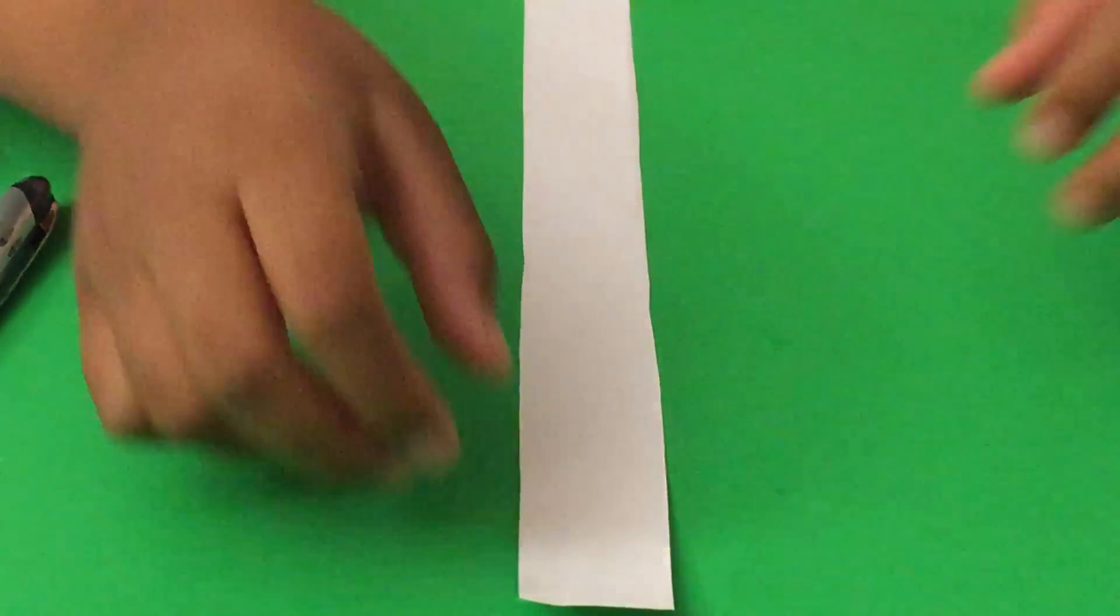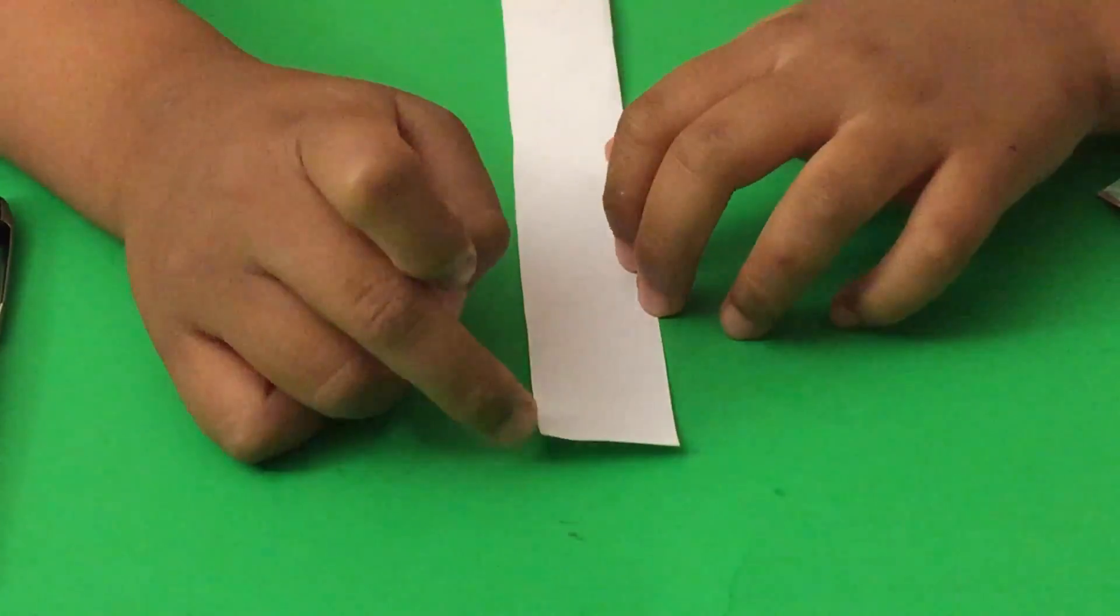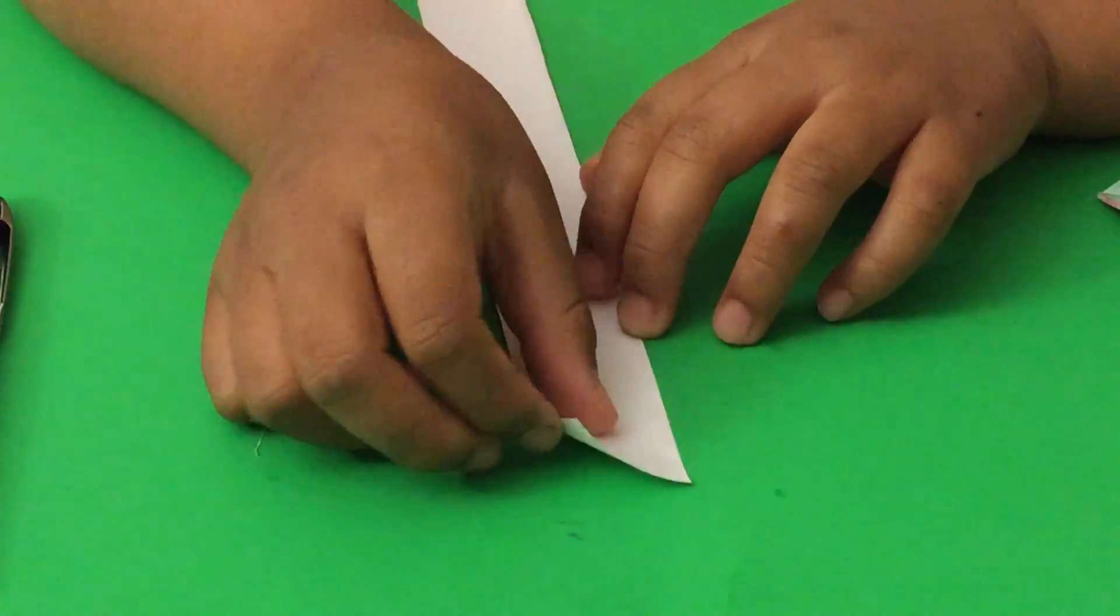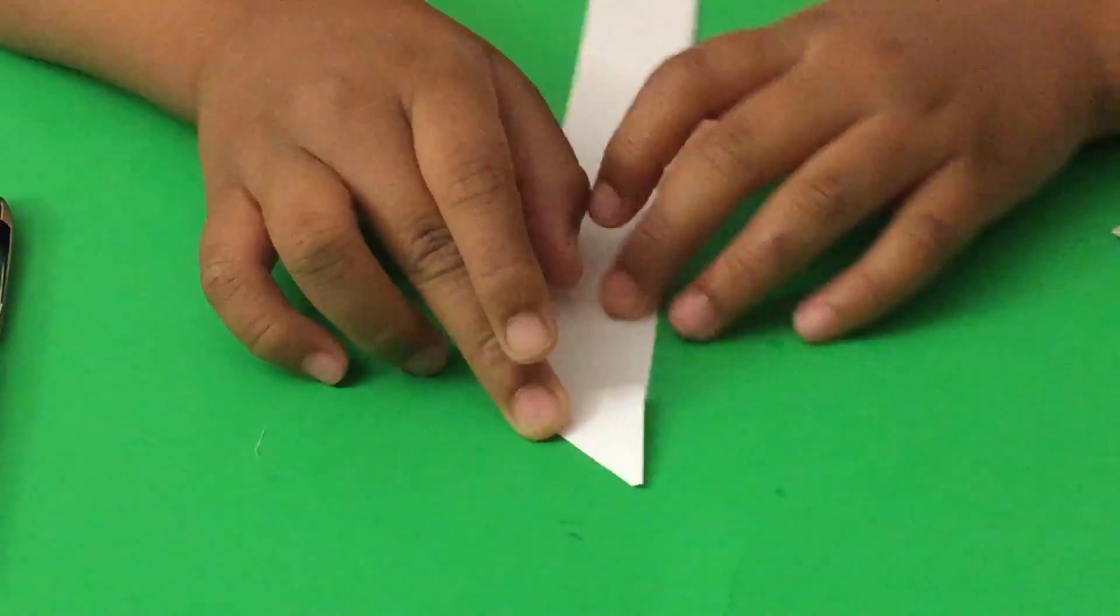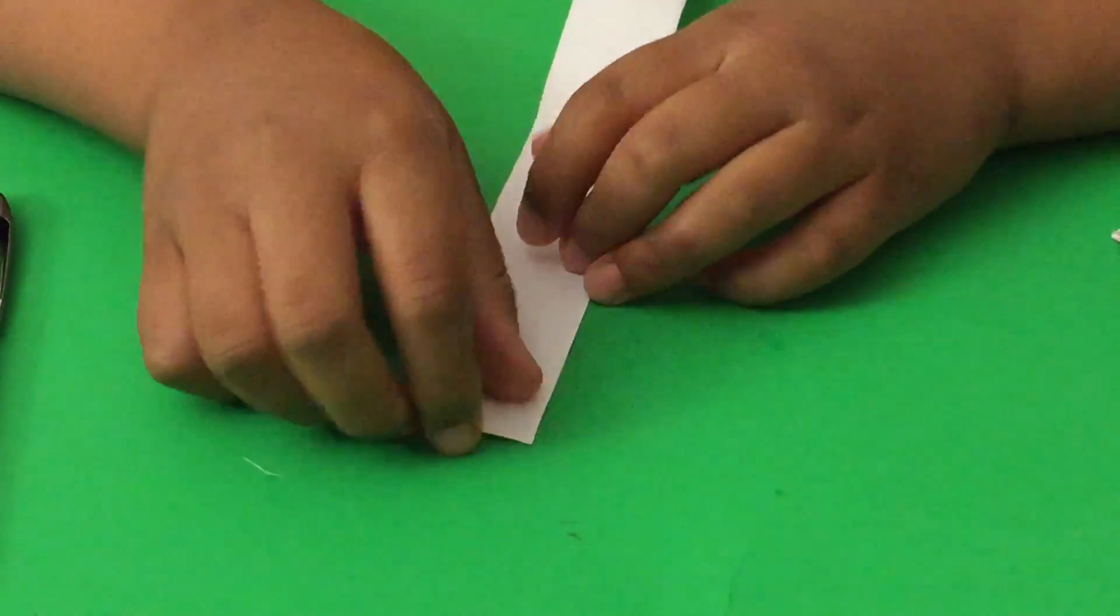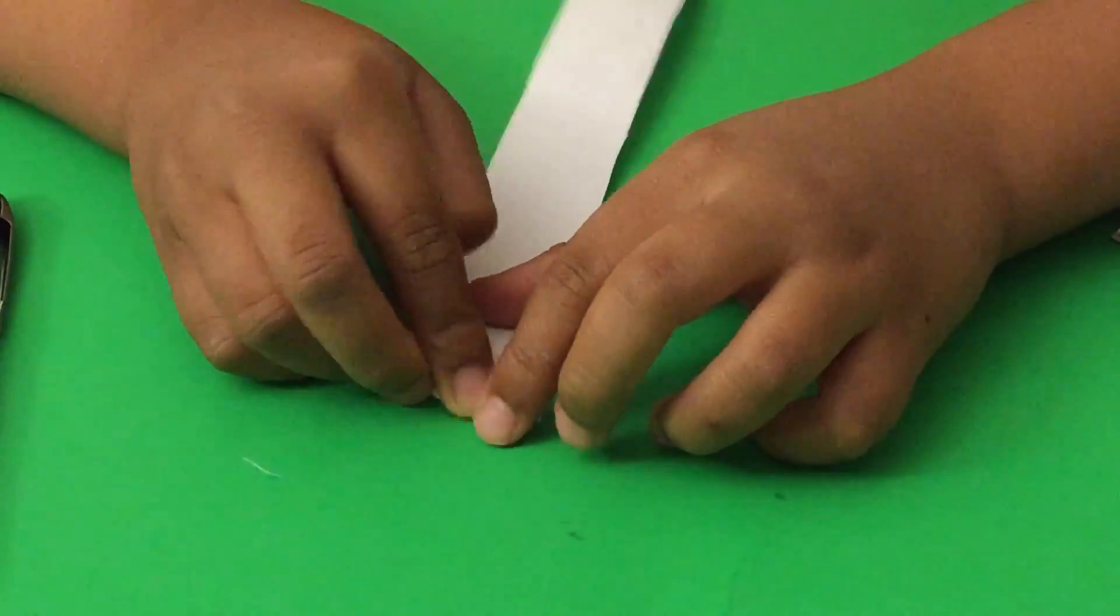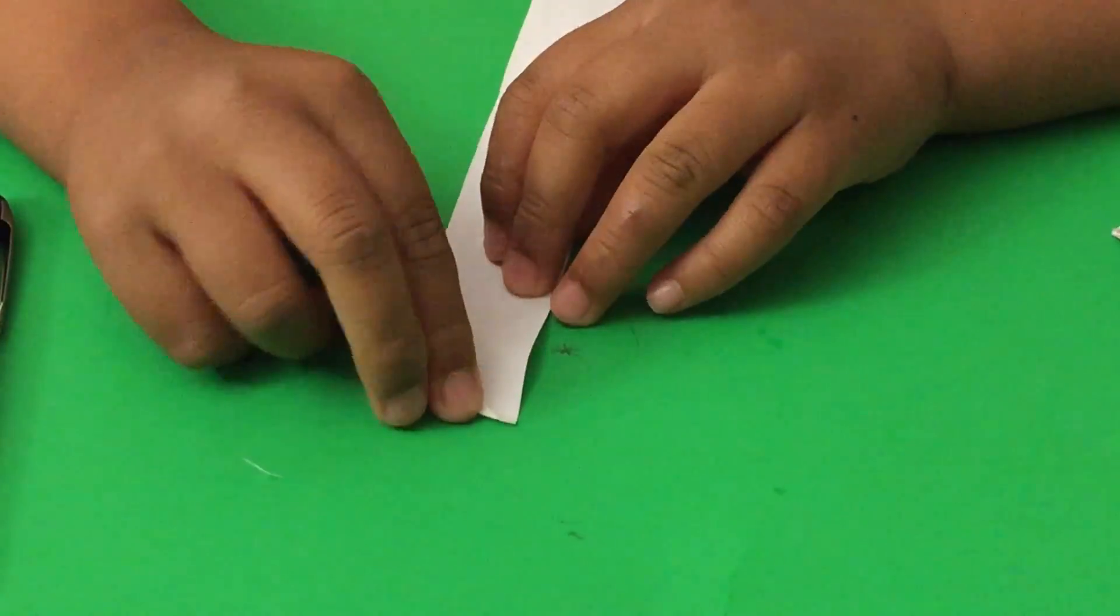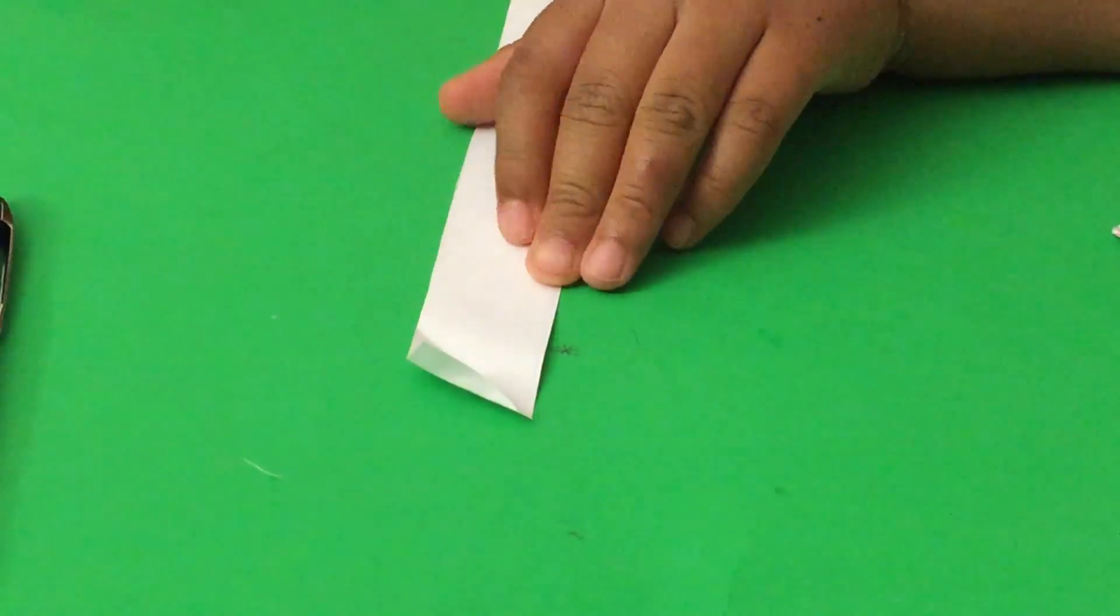First, take the paper strip and fold from this corner to this edge. Then, fold from this edge to the crease we just made. After that, we cut the smaller triangle off.